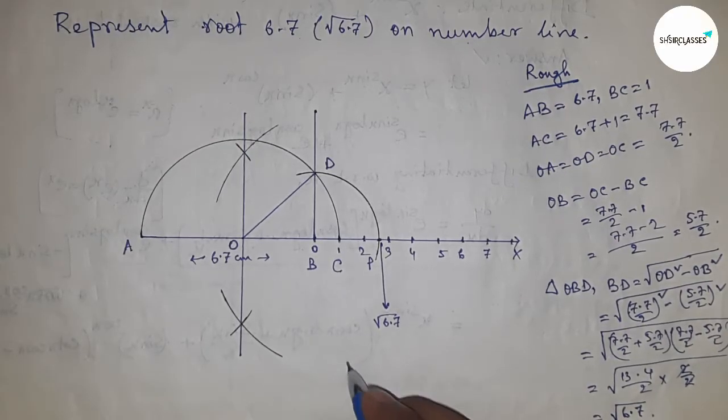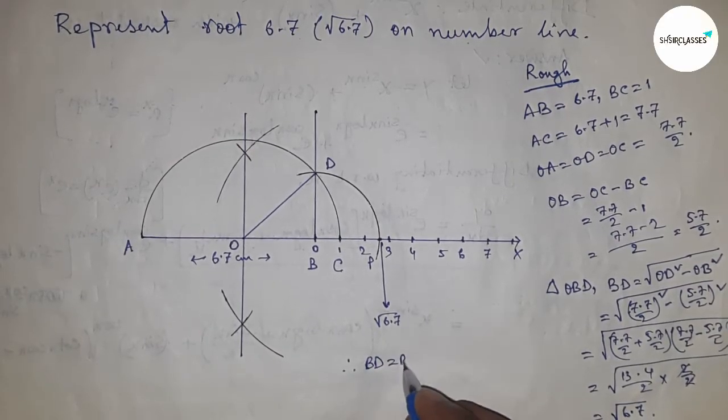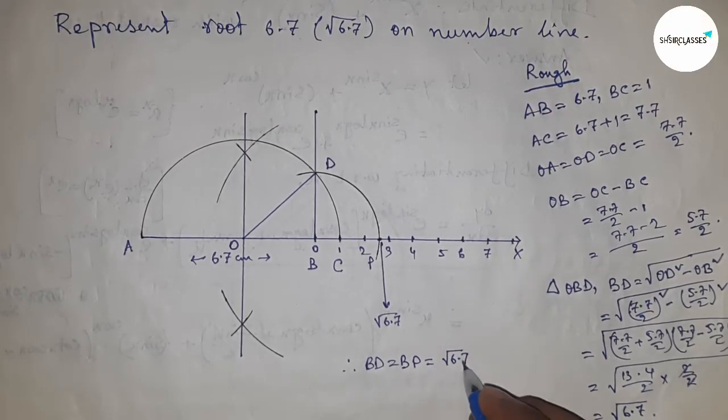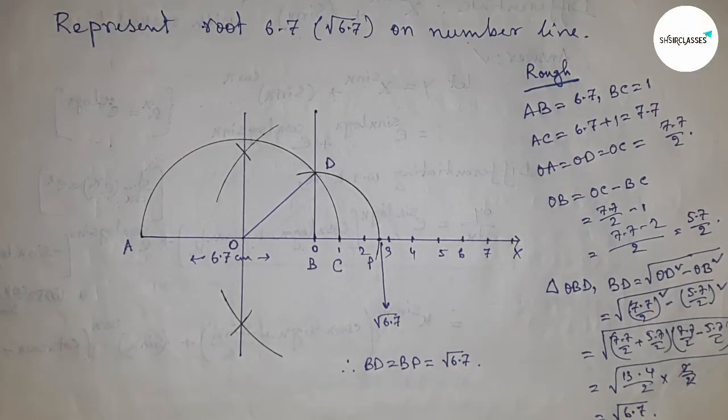Therefore BD equals BP equals root 6.7. That's all, thanks for watching. Please subscribe, like, and comment on my video.